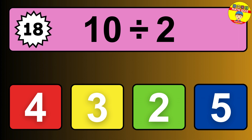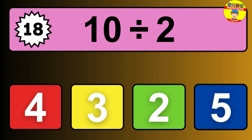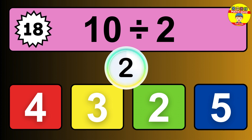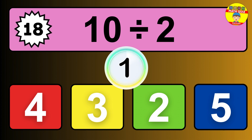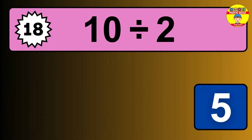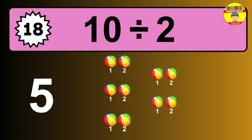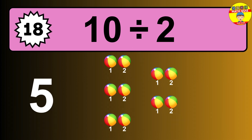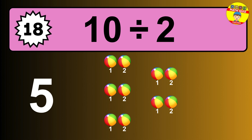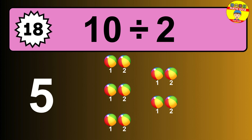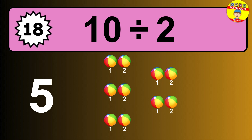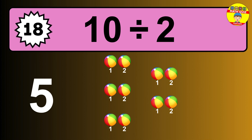10 divided by 2 is... time to think. Let's go to the solution. Divide the number 10 by 2. Each group contains 2 units. So dividing 10 by 2 results in 5 equal groups. Thus, the result is... 10 divided by 2 equals 5.